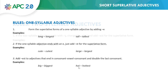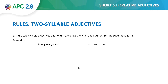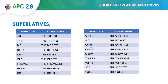The next rule: two-syllable adjectives. If the two-syllable adjective ends with -y, we change the y to i and add -est for the superlative form. Examples: happy → happiest, crazy → craziest. Here we have the list of adjectives in their superlative form.